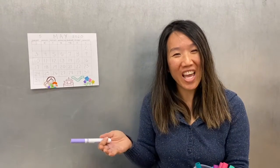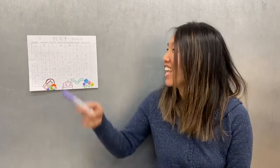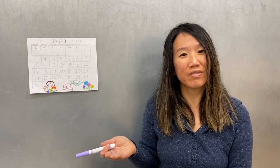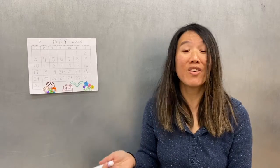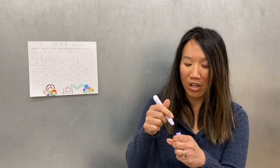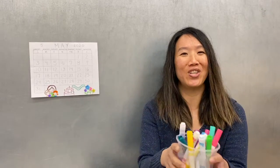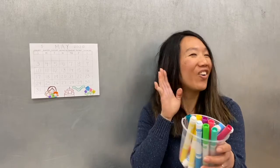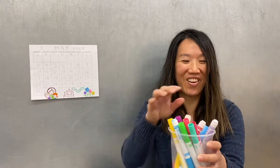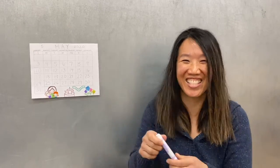All right friends, now we're going to do our calendar. What month is it again? It's May, so we're going to count. This is the beginning of the month, so what number do we start with? That's right, we start with one. How do you say one in Chinese? That's right. Who knows how to say one in Spanish? Yes, uno. All right friends, what color should I choose? Let's do tropical violets.